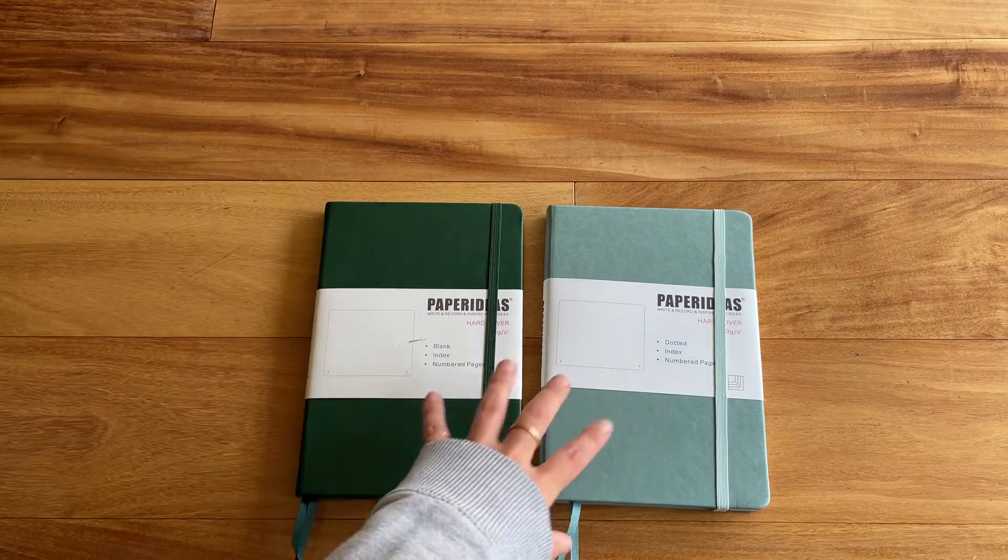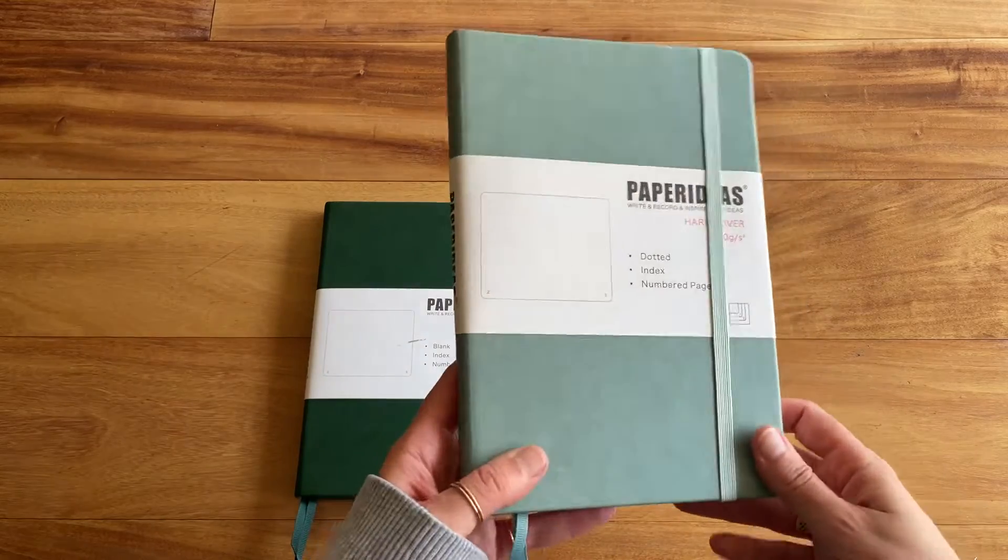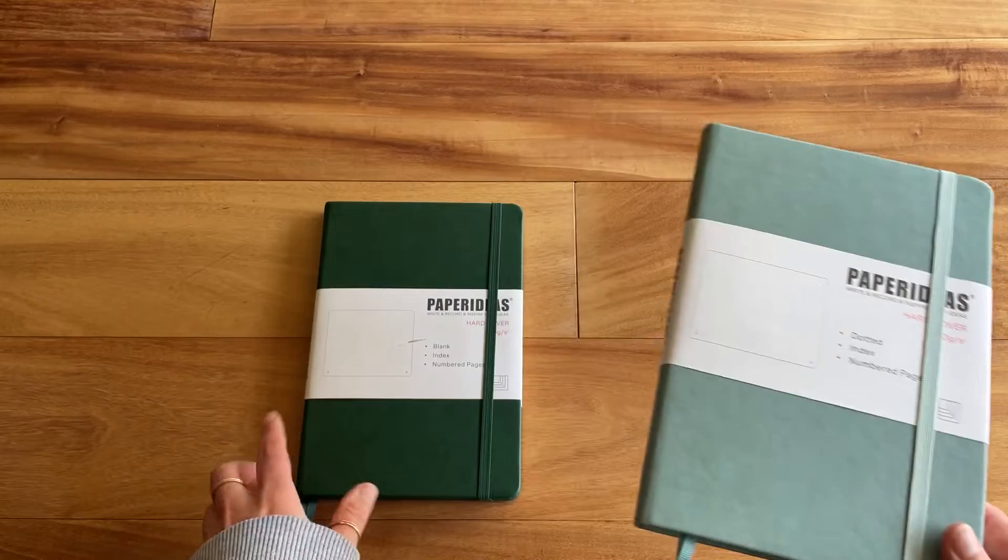And as I said, I'm going to do a review on those two today. They are hardcover notebooks, A5. This is the color Iceberg. And then it also comes in green. And they have several different colors.